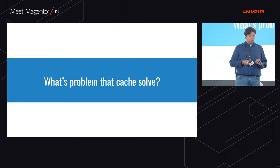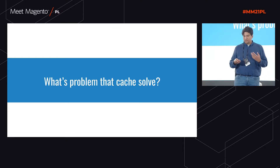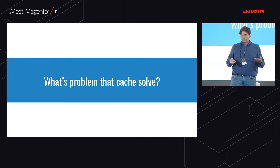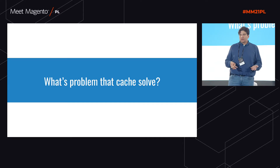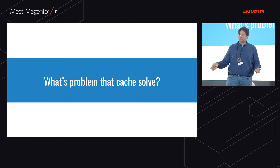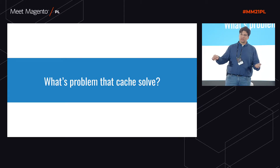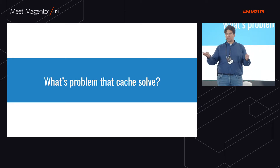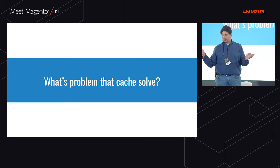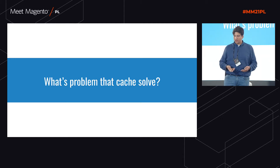So what kind of problem does cache solve? First of all, it solves the problem of concurrency. As more people visit your website, you can serve data from memory and they're on their way instead of generating pages from the beginning.